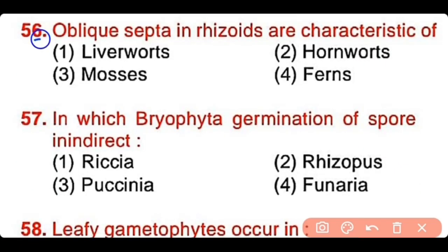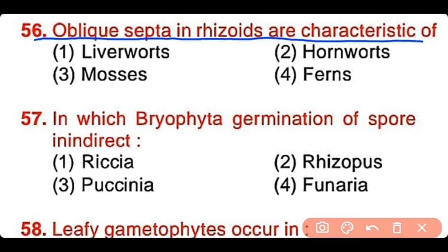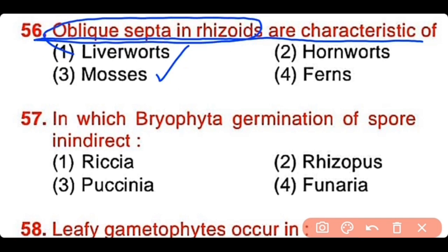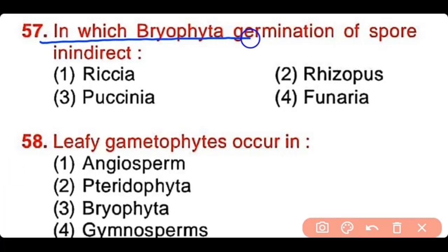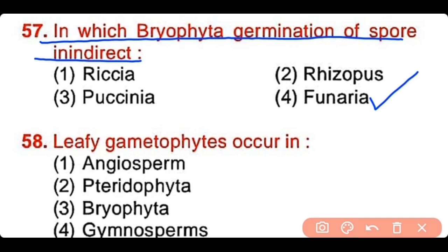Question number 56: Oblique septa in rhizoids are a characteristic of liverworts, hornworts, mosses, or ferns. The correct answer is option 3. Mosses have oblique septa in the rhizoids of the gametophyte. Question number 57: In which bryophyte is the germination of spores indirect? Riccia, Rhizopus, Puccinia, or Funeria. The correct answer is option 4. Funeria is a bryophyte in which the germination of spores is indirect.